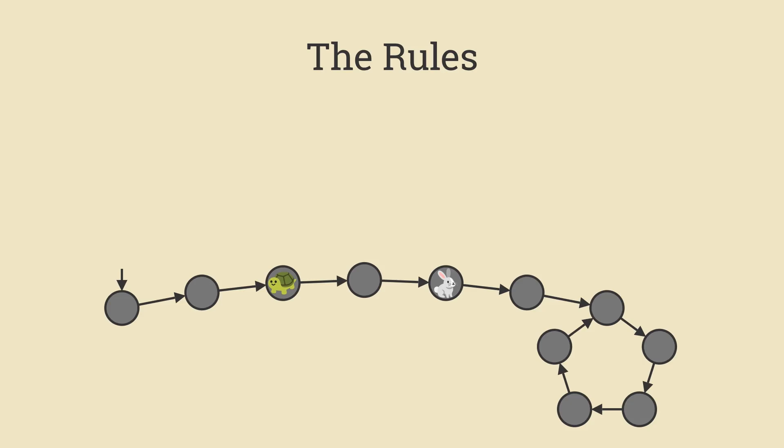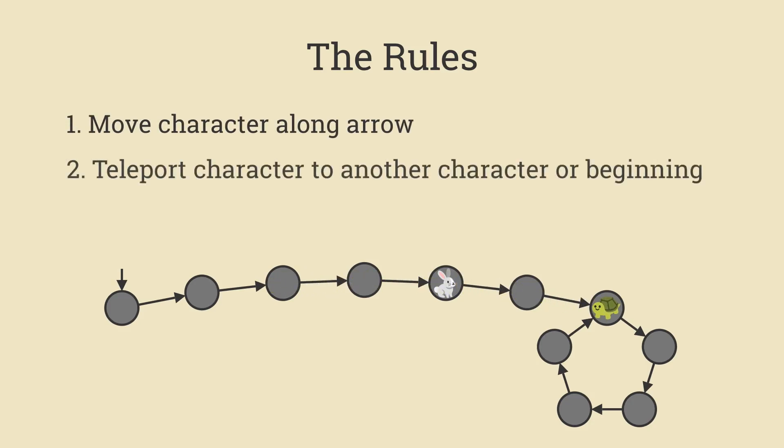Now I'd like to lay down some ground rules on things we're allowed to do. If you've coded with linked lists before, these should all look familiar. The simplest thing we can do is just simply move a character along an arrow. The second thing we can do is teleport a character to any other character, or even back to the beginning. And finally, we can check if two characters are standing on the same node. The third rule is basically the only way in which we can actually infer the existence of a cycle. You don't get to know things like the number of nodes, which node is which, how many incoming edges there are, so on and so forth.